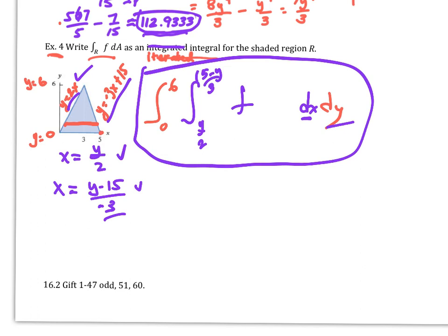Any heights derived from a function give the third dimension for volume. If the height were 1, you'd just be finding the area of this triangle, since a height of 1 makes the integral equivalent to the base area.